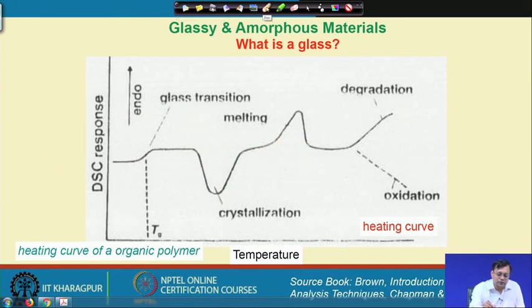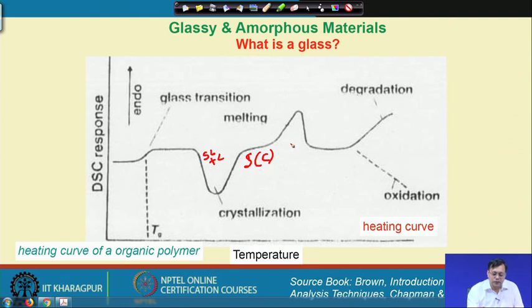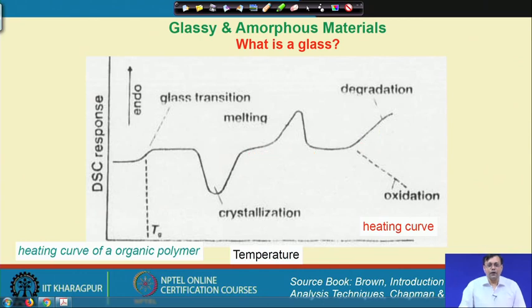To summarize the phase regions on the DSC trace: we have glass plus crystal in one region, then crystalline solid, then super-cooled liquid, and finally liquid at the highest temperatures. Beyond the liquidus temperature, the liquid degrades due to oxidation. This is how a DSC response looks when a glassy material is heated inside a differential scanning calorimeter.